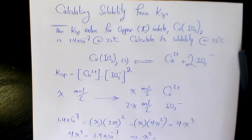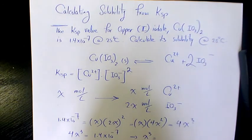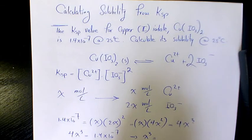Then you can say to the power of 1/3. That's going to be x equals 3.27×10^-3 mol/L.